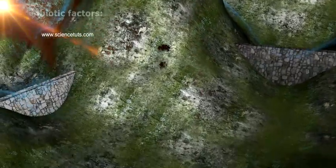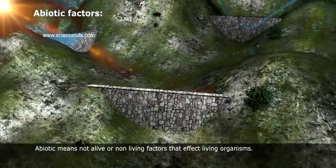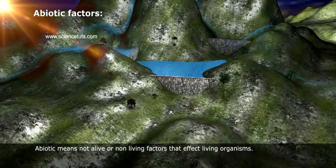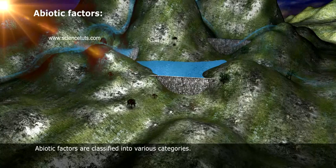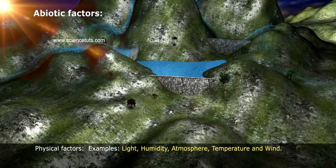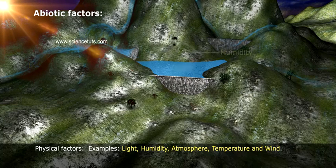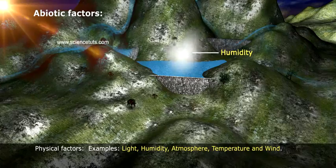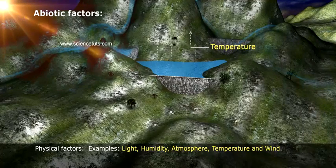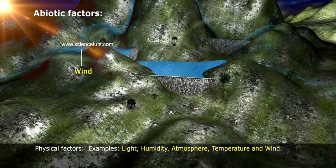Abiotic factors. Abiotic means not alive, or non-living factors that affect living organisms. Abiotic factors are classified into various categories. Physical factors — examples include light, humidity, atmosphere, temperature, and wind.